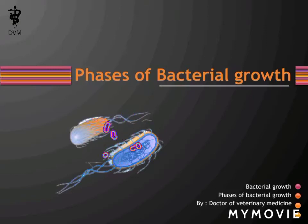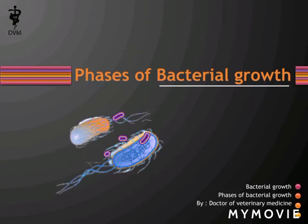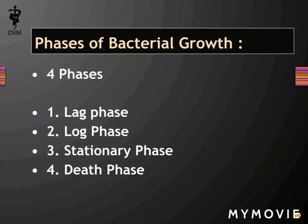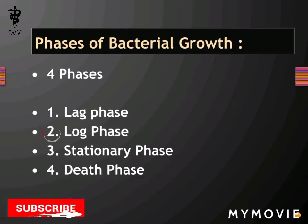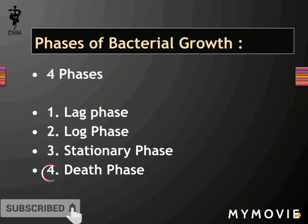Let's discuss the phases of bacterial growth. Bacteria undergo four phases: lag phase, log phase, stationary phase, and death phase.